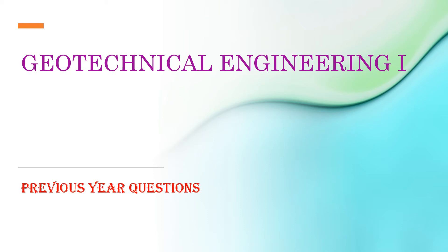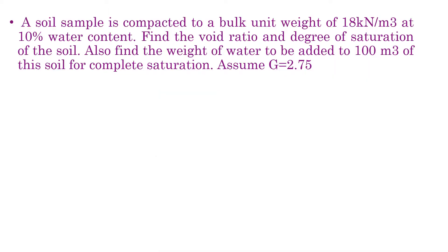Welcome back to geotechnical engineering class. Today we are going to discuss some numerical problems from previous year question papers. Our first question: a soil sample is compacted to a bulk unit weight of 18 kilo Newton per meter cube at 10% water content. Find the void ratio and degree of saturation of the soil, and also find the weight of water to be added to 200 meter cube of this soil for complete saturation.